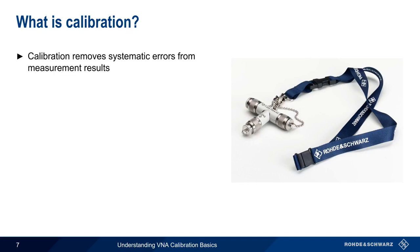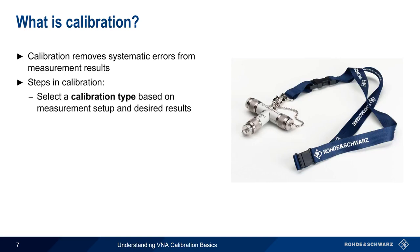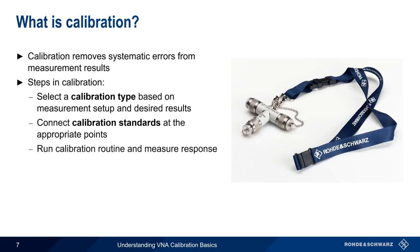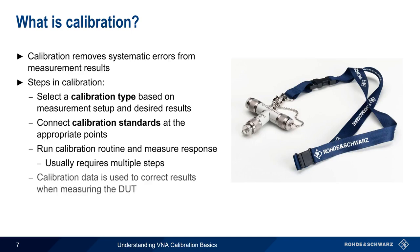Calibration can be defined as the process by which we remove systematic errors from our measurement results. In order to perform a calibration, we first select a type of calibration based on the measurement setup and desired results. There are numerous types of calibration, which we'll cover shortly. We then connect special devices called calibration standards to different points in our test setup, usually where the DUT or device under test will eventually be connected. The VNA calibration routine is started and the response is measured. Note that many types of calibration require different standards to be connected and disconnected multiple times and or in multiple places. The resulting calibration data is then used to correct our results when measuring the device under test.